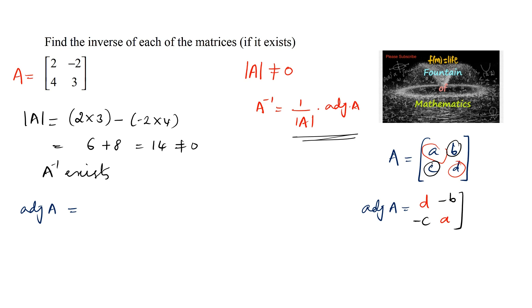Applying to our matrix, we interchange the diagonal elements 2 and 3 to get 3 and 2, and change the sign of the remaining elements -2 and 4 to get 2 and -4. So adjoint of A equals [3, 2; -4, 2].